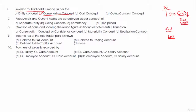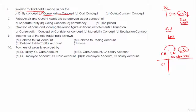Next: fixed assets and current assets are categorized as per which concept — separate entity, going concern, consistency, or time period? First we should understand what fixed assets and current assets are. Fixed assets are those assets purchased with an intention to use in the business; there is no idea to sell them. The intention is more important — it is purchased to use in the business with no idea to sell. They help in generating revenue or reducing cost for a longer period of time, greater than 12 months.